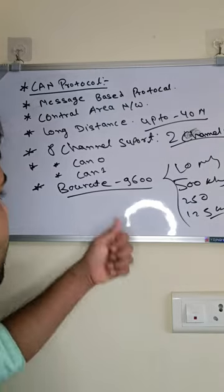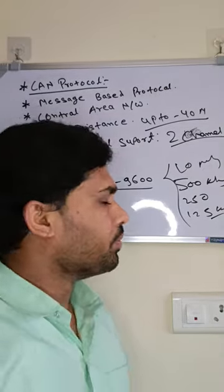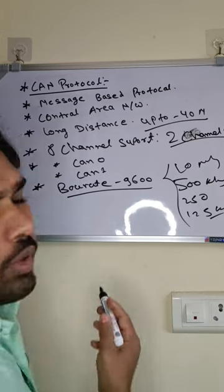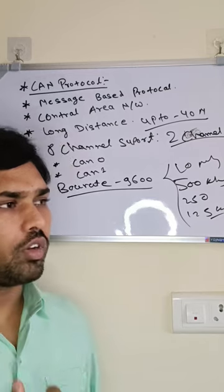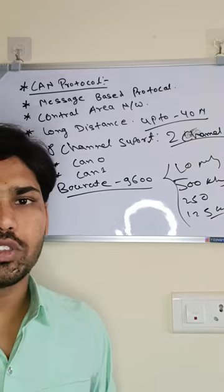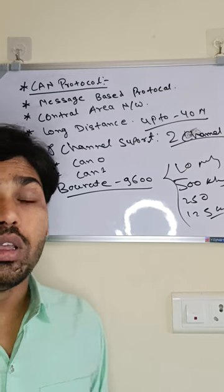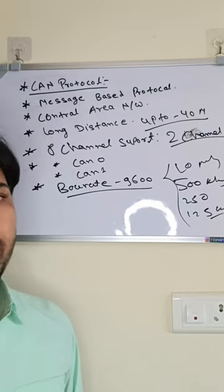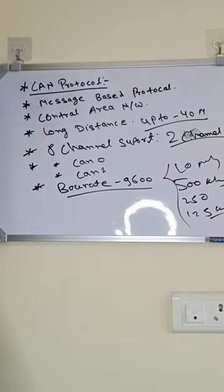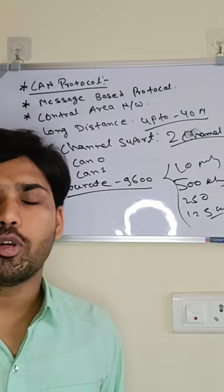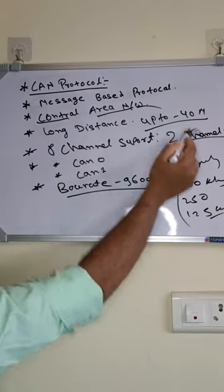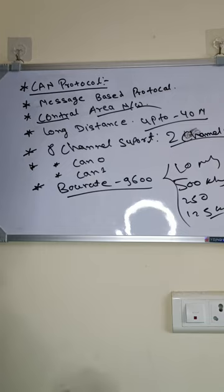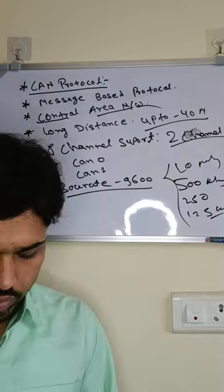The termination resistor is 120 ohms and the standard baud rate is 9600. CAN is a message-based protocol and a long distance protocol — we can communicate up to 40 meters. It has eight channels and we use only two: CAN0 and CAN1. The standard baud rate is 9600 and CAN stands for Controller Area Network.